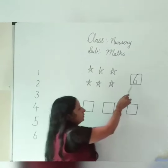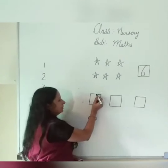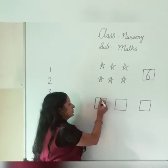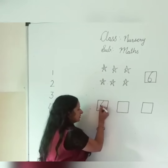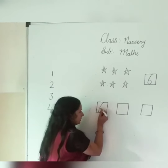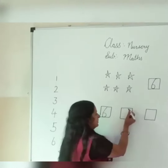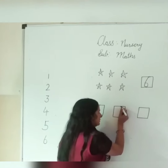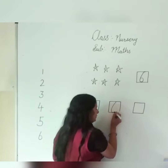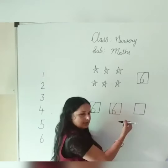Now how do you write number 6? First of all, do you know like a curve? So first, you should curve and round number 6. You make a curve and go inside number 6.